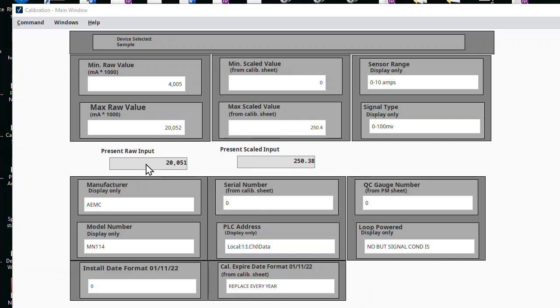Right now I'm currently injecting a 20.04 milliamp signal. Our PLC input is slightly off; it says we have a 20.052 milliamp signal. But my process meter is calibrated and I'm going through the wires, so I don't really care if the PLC is a little bit out of spec. We're just going to call this the high end because I'm injecting the correct signal. So I'm going to take 20.052 and make sure that I put that as my raw max.